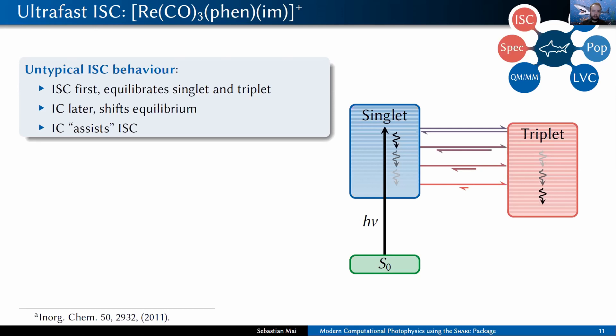Everything can be summarized in this scheme where due to the large spin-orbit couplings and high density of states, intersystem crossing is so fast that it equilibrates between singlets and triplets very quickly. But as the nuclear motion relaxes the system, after some time this equilibrium has shifted more and more towards triplet states because those provide the lower energy minima compared to the singlet states. So that would be internal conversion which is assisting intersystem crossing.